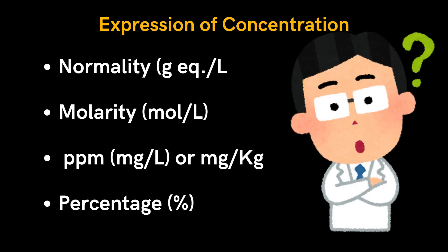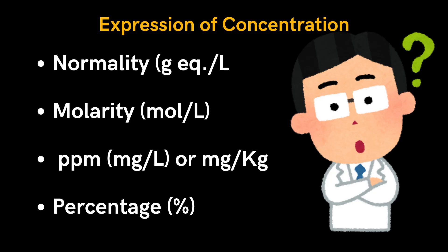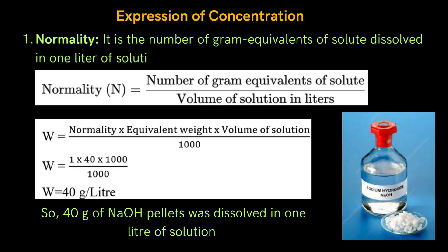Now let's understand how the concentration of a solution can be expressed in normality, molarity, percentage, mole fraction, and ppm during quantitative analysis of an unknown substance. Normality is defined as the number of gram equivalents of solute dissolved in 1 liter of solution. Mathematically: N = number of gram equivalents of solute ÷ volume of solution in liters. To prepare 1 normal NaOH solution: W = normality × equivalent weight × volume (mL) ÷ 1000 = 1 × 40 × 1000 ÷ 1000 = 40 g. This means 40 grams of NaOH pellets dissolved in 1 liter of solution.